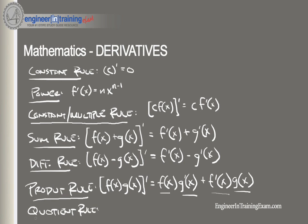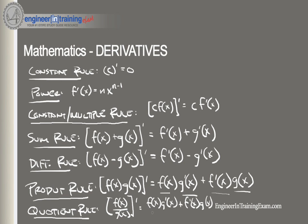The quotient rule states that if we have a function f(x) divided by g(x), the derivative is [f'(x)·g(x) - f(x)·g'(x)] divided by g(x) squared.